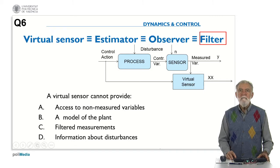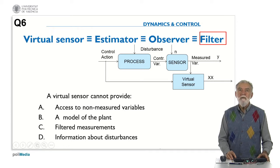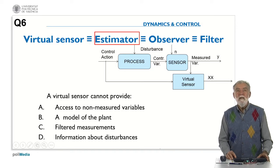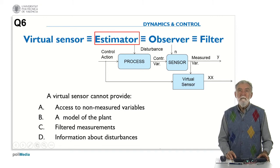Of course, we can get information about the filtered variables. Measurements in general are affected by noise, and the virtual sensor can provide filtered measurements. We can also use it to estimate the disturbances in the plant, so the virtual sensor can provide information about disturbances.